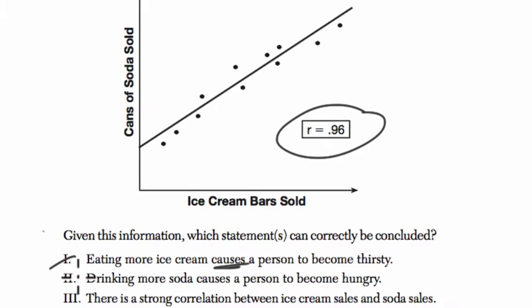The same thing is here. In choice 2, drinking more soda causes a person to become hungry. There's a correlation between them, but certainly not one that causes the other.